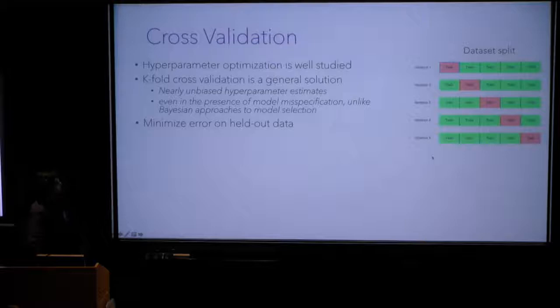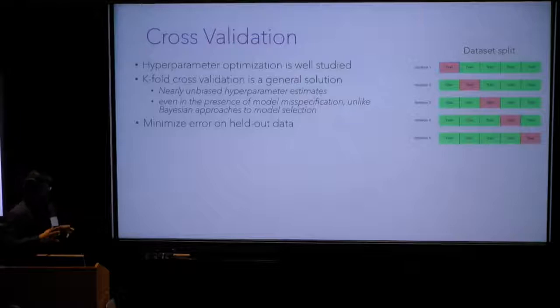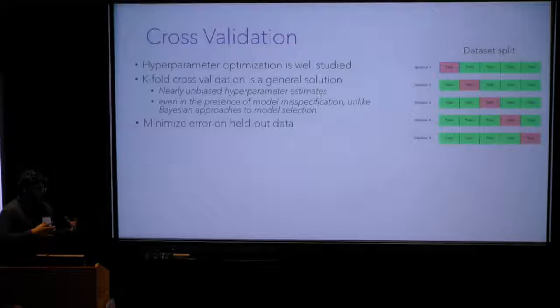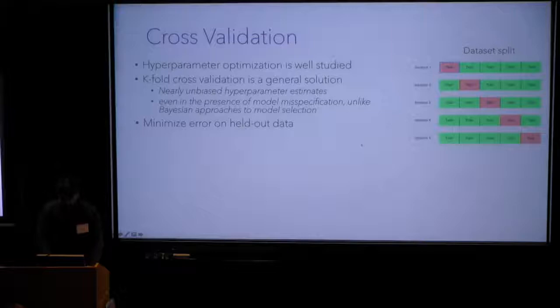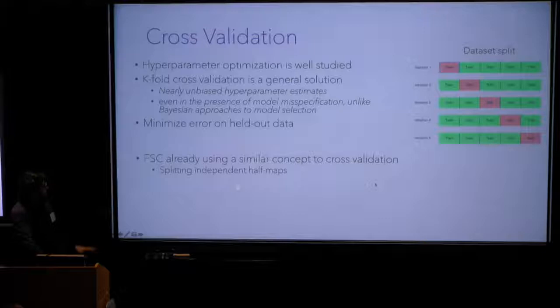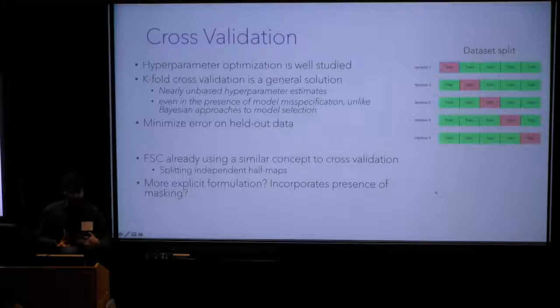Cross-validation has a couple of nice properties. First, it's nearly unbiased in terms of yielding unbiased hyperparameter estimates. It also works even in the presence of model misspecification, unlike other hyperparameter selection methods like Bayesian techniques. So even if we say something wrong in our model — maybe our protein doesn't correspond to just some protein and some solvent, or there's a partially occupied state — we'll still get a cross-validated estimate that doesn't overestimate what's present in the data. In fact, FSC already uses a similar concept by splitting independent data into two half-maps.